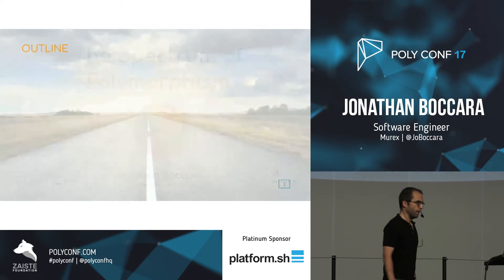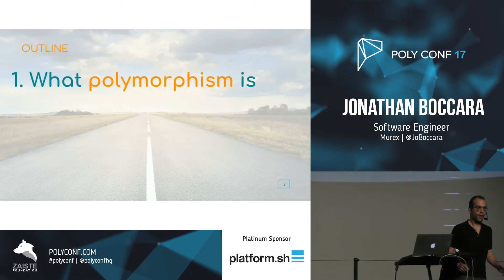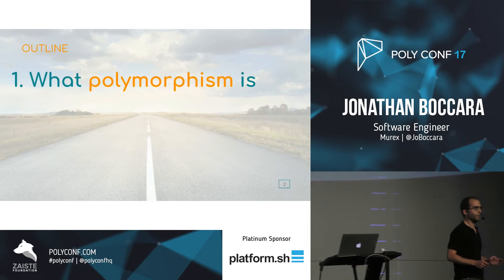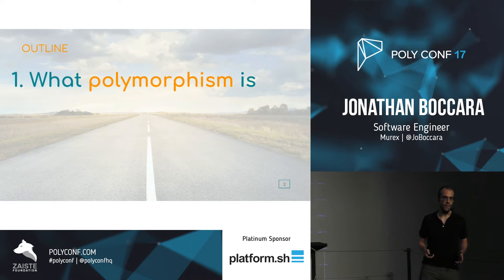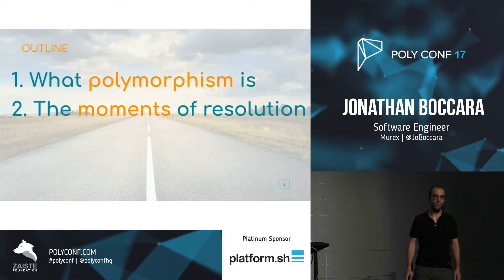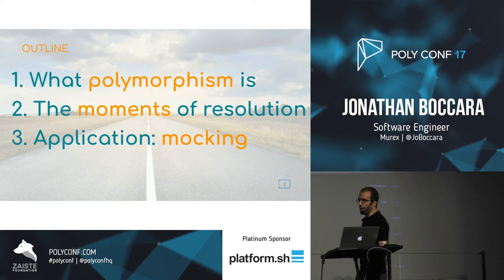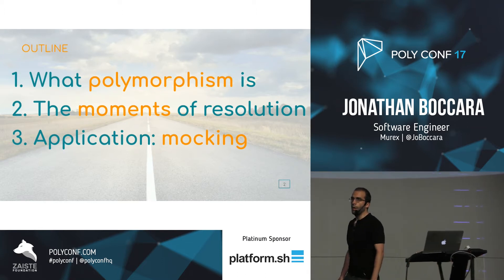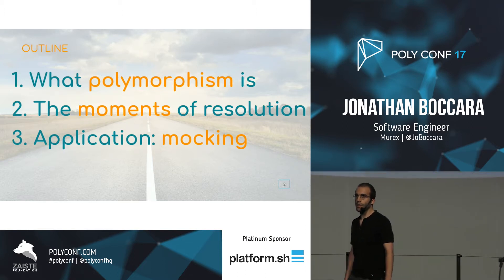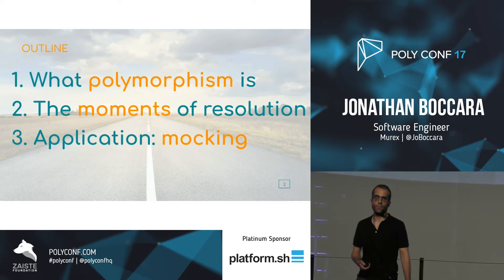The message I want to get across today is that there's much more than one type of polymorphism, and that we need to be able to pick the right one for our situation. The outline for this talk is: first, we'll align on what polymorphism is; then we'll get to the bulk — the moment that polymorphism is resolved, using C++ as an example. We'll also cover one practical example: mocking.